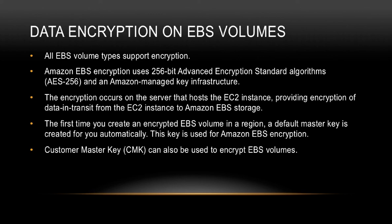Let's talk about data encryption on EBS volumes. All EBS volume types support encryption. Amazon EBS uses 256-bit Advanced Encryption Standard algorithms, also known as AES-256, and an Amazon-managed key infrastructure. The encryption occurs on the server on which the EC2 instance is hosted, providing encryption of data in transit from the EC2 instance to the EBS storage. The first time you create an encrypted EBS volume in a region, a default master key is created automatically and used for Amazon EBS encryption.